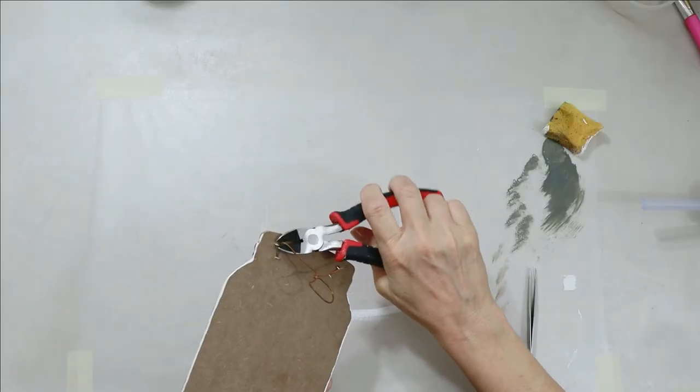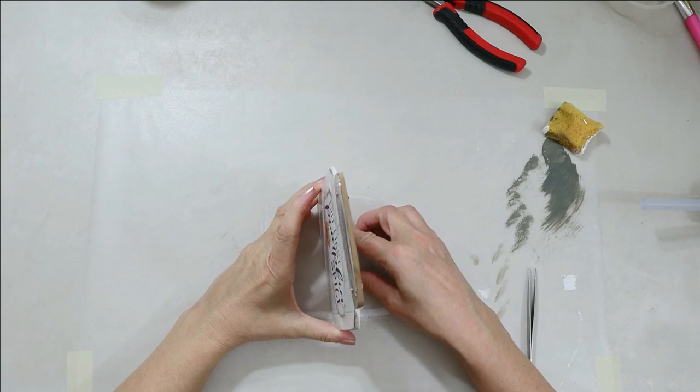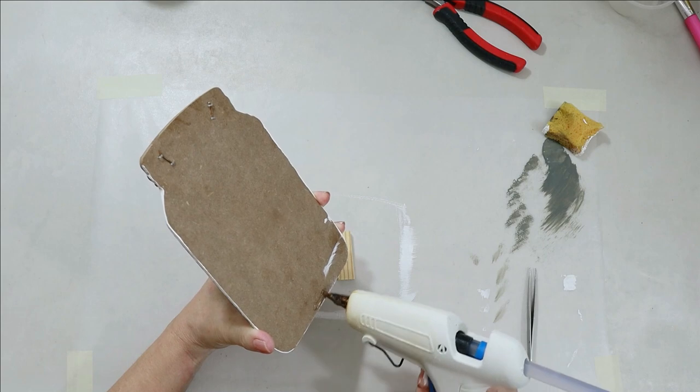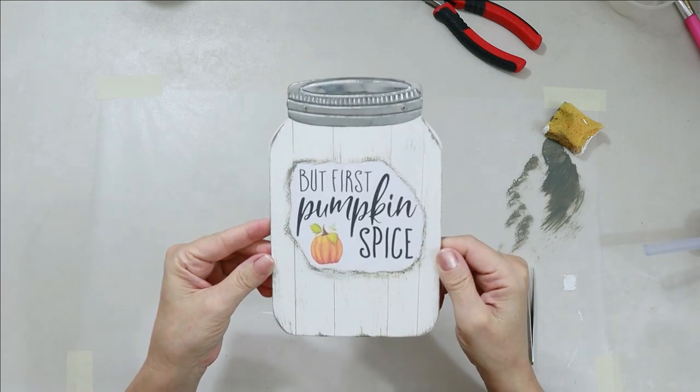And this was meant originally to be a hanging piece. So I'm just using some wire clippers to clip that wire off. I'm going to use a tumbling tower block as a stand in the back. We're going to hot glue it on and that's it. I absolutely love the way this came out.